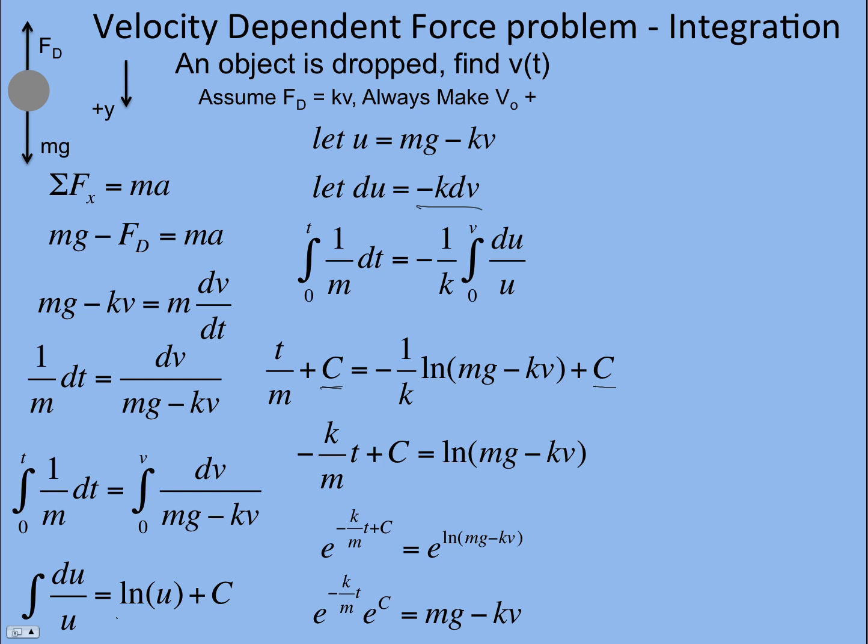And so I get that. So I have e to the c here. Well, that's just some other constant, right? So I can just call that constant c again. And then I have e to the negative km over t is mg minus kv. And so we need to figure out what c is.